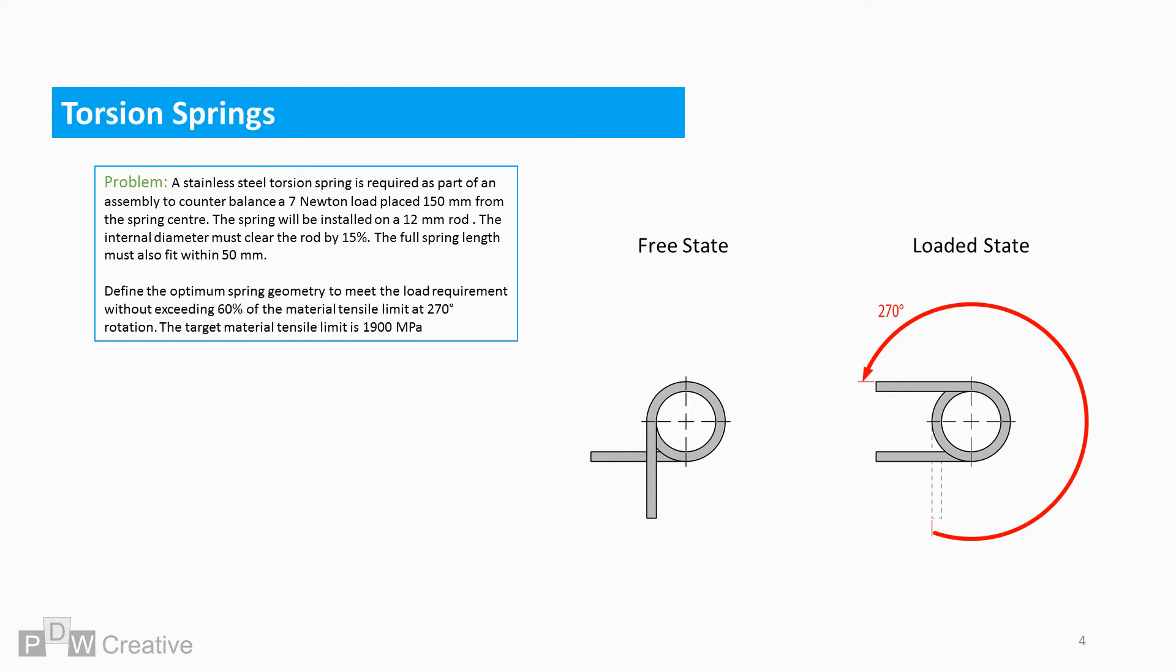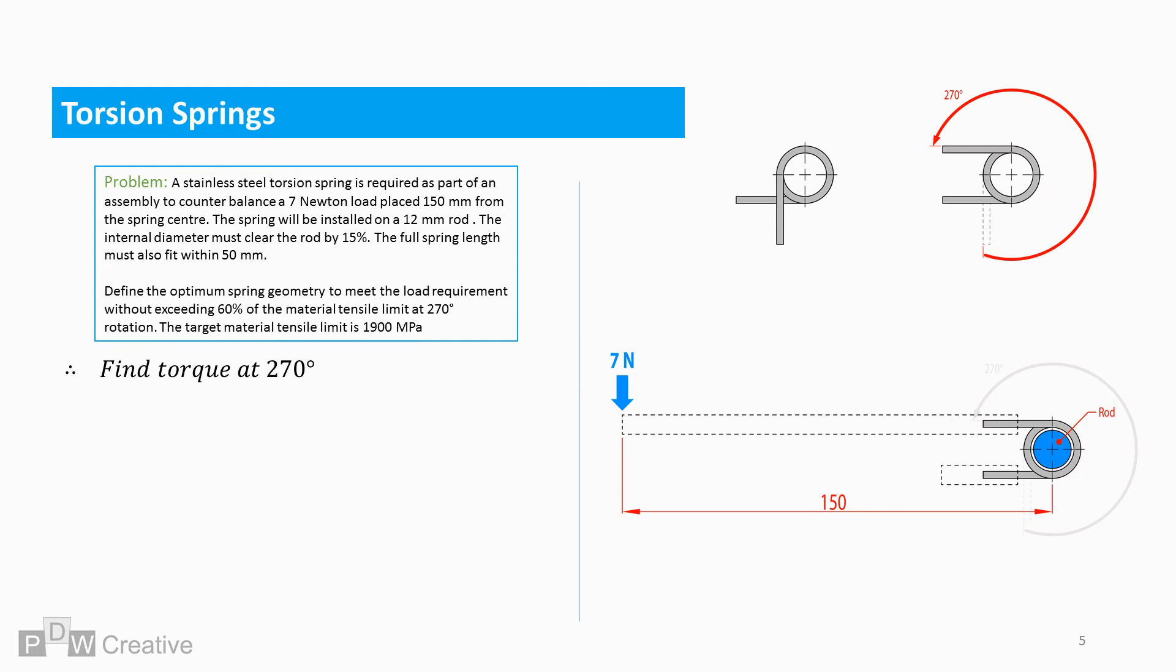Let's start work on the solution. First, let's begin by finding the spring stiffness or rate. We can find the moment or torque required at 270 degrees to counterbalance the load.